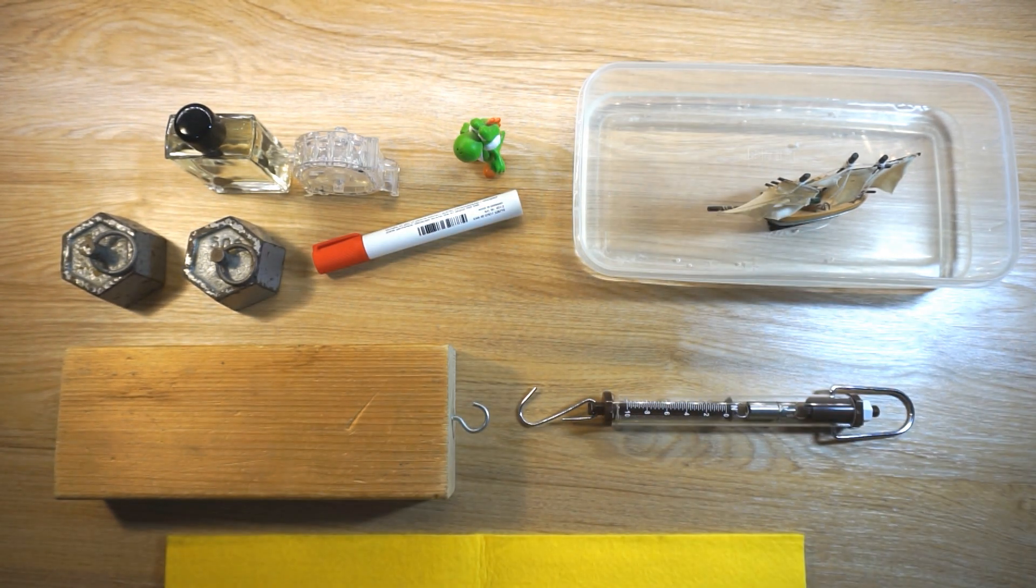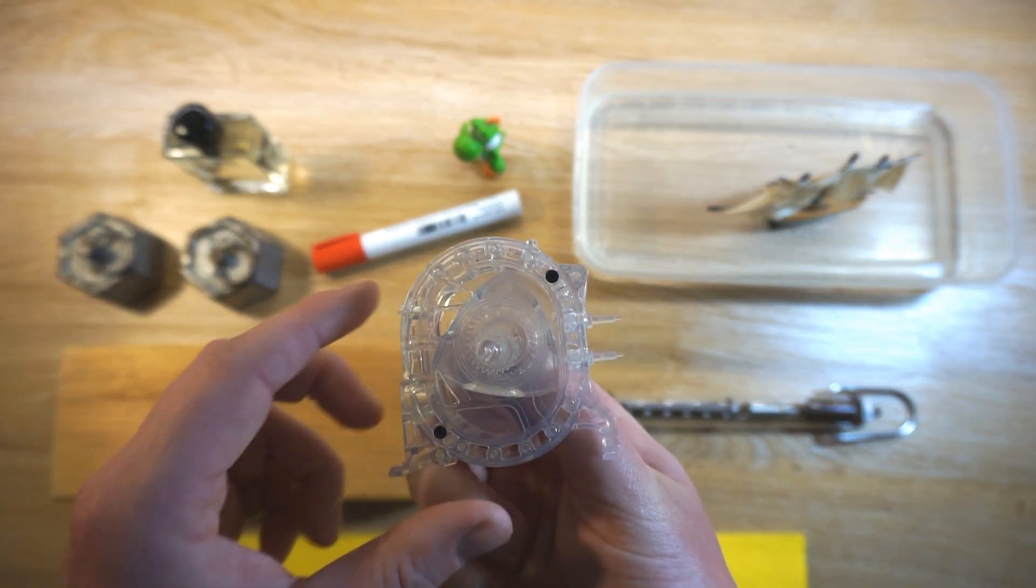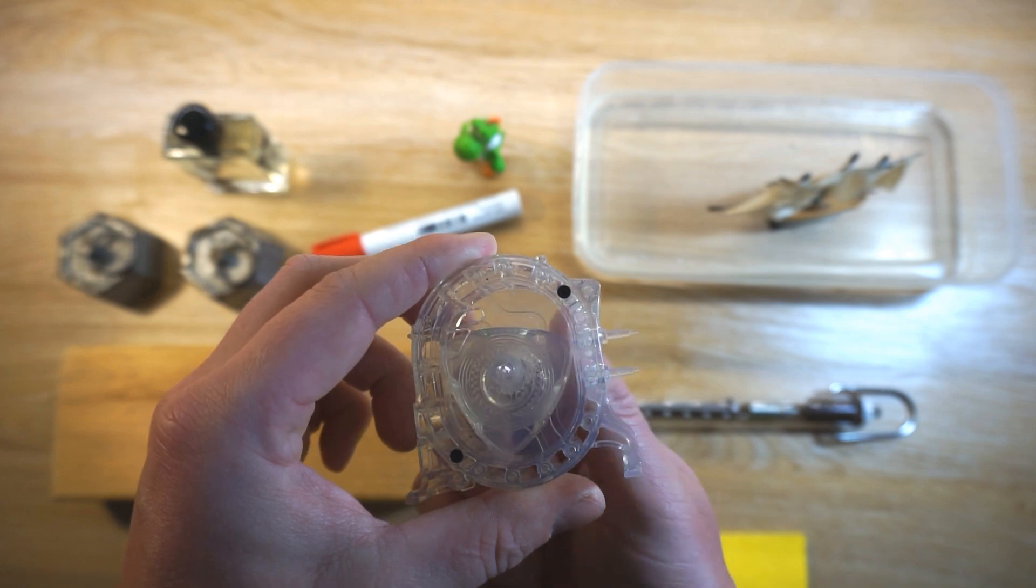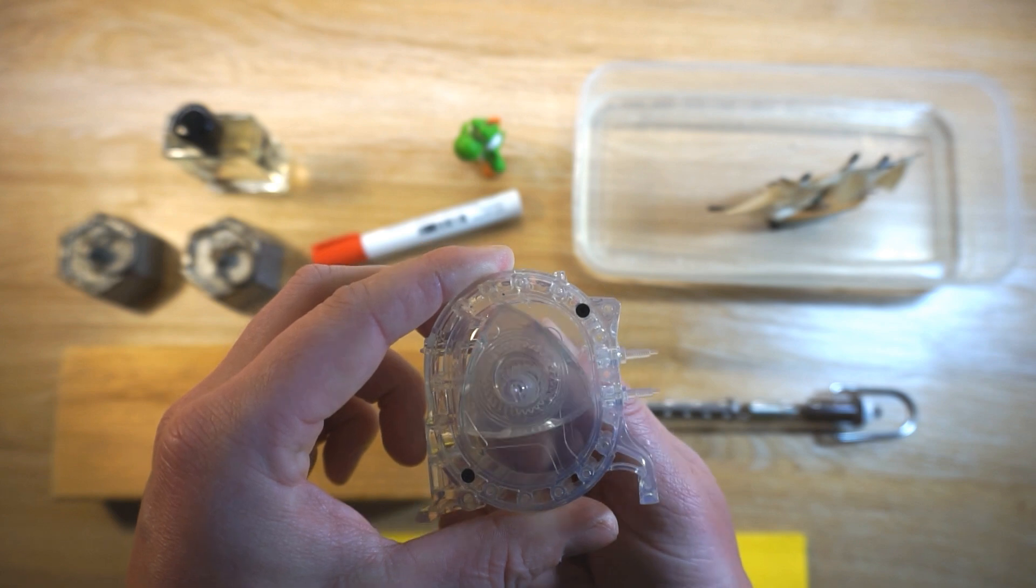Where friction is not as useful and can even be quite costly is in things like machines and engines, where you've got moving parts rubbing against each other all the time. Over time that wears them down and can lead to breakages, so we have to keep adding oil to engines to reduce that level of friction.